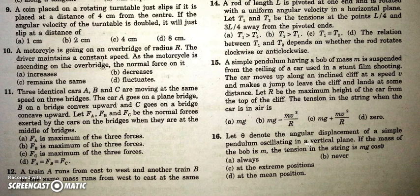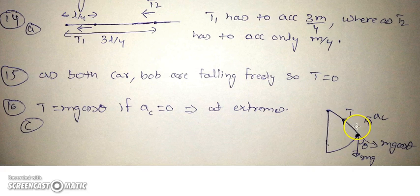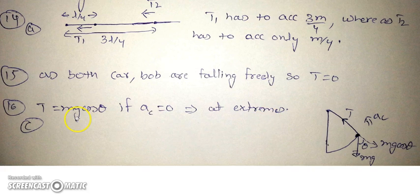We have to find at what instant the tension equals mg·cosθ in a rotating pendulum with amplitude θ. If T = mg·cosθ, then the centripetal acceleration must be zero, which means the speed v must be zero. This only occurs at the extreme positions. So T equals mg·cosθ only at the extremes; at any other position T is greater than mg·cosθ. Thank you.